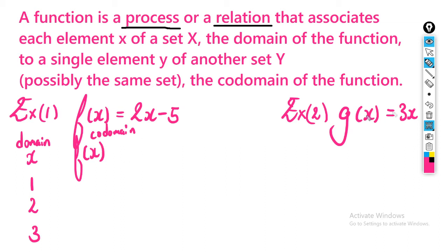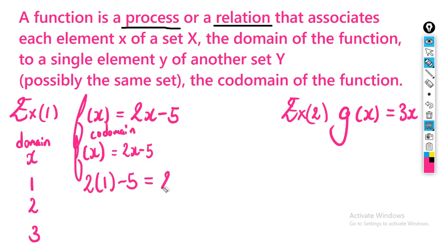For f(1), we put 1 into the equation: 2 times 1 minus 5 gives us 2 minus 5, which is negative 3. So when x is 1, it maps onto negative 3.